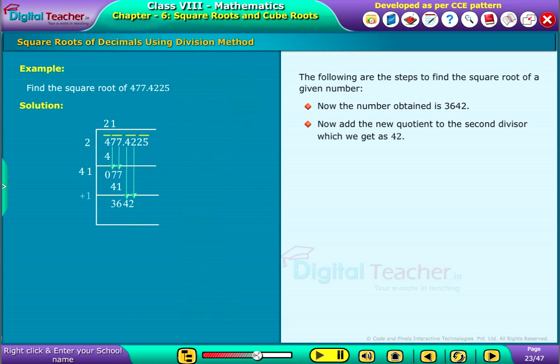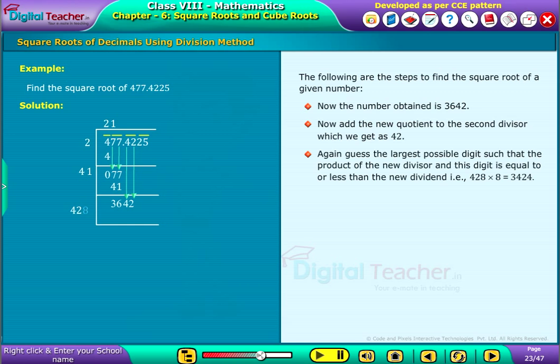Now, add the new quotient to the second divisor which we get as 42. Again, guess the largest possible digit such that the product of the new divisor and this digit is equal to or less than the new dividend. That is, 428 into 8 is equal to 3424.